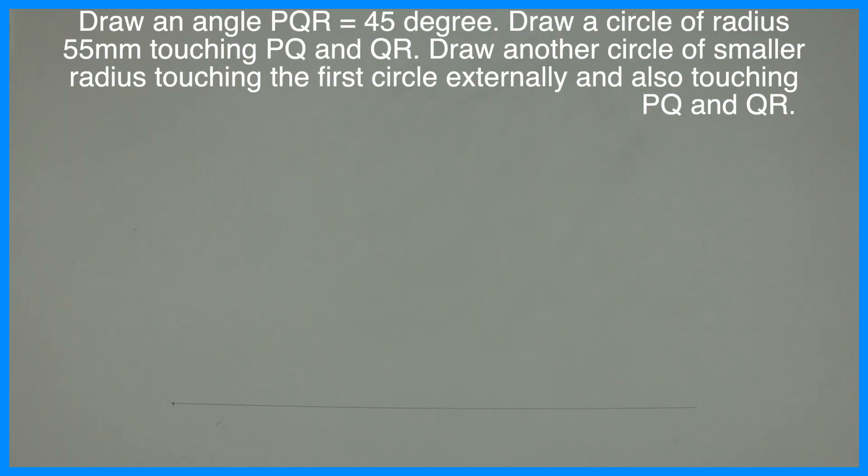Welcome to Technical Drawing. Today we are going to learn how to draw an angle PQR 45 degrees. We need to draw a circle of radius 55 mm touching PQ and QR, and we have to draw another circle of smaller radius touching the first circle externally and also touching PQ and QR.